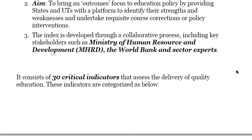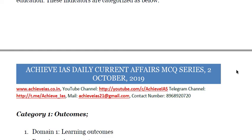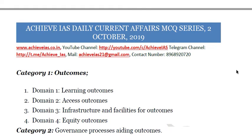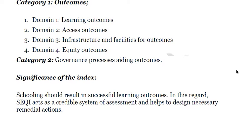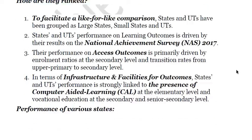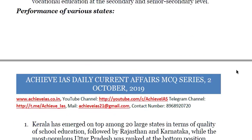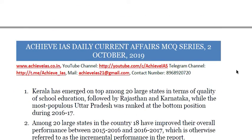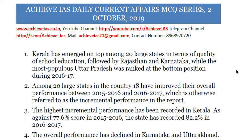Thirty critical indicators are assessed and categorized as outcomes and governance processes aiding outcomes. The significance is that schooling should result in successful learning outcomes. In this regard, it acts as a critical system of assessment and helps design necessary remedial actions.